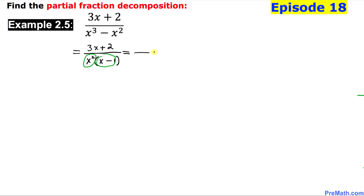Let's start the partial fraction decomposition. For x squared I am going to put down two fractions: the first with denominator x and the second with denominator x squared. For the other linear factor I'll add one more fraction with denominator x minus 1. The numerators will be constants A, B, and C respectively.